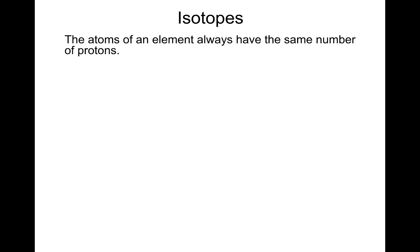So what's an isotope? The atoms of an element always have the same number of protons. I'm going to show you a periodic table and show you a little pattern that you might not be aware of. But atoms always have the same number of protons. Isotopes are atoms of the same element, but they've got different numbers of neutrons.